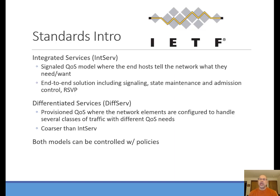Integrated services we don't see as much, and that's what we call signaled QoS. Devices signal into the network, usually with something like resource reservation protocol, and ask the network for additional handling and bandwidth constraints. If the network has the ability, the services are provided, but it creates a lot of state on the routers to remember. Most configurations I've seen are going to be based on differentiated services, where the router is provisioned with a static set of policies.